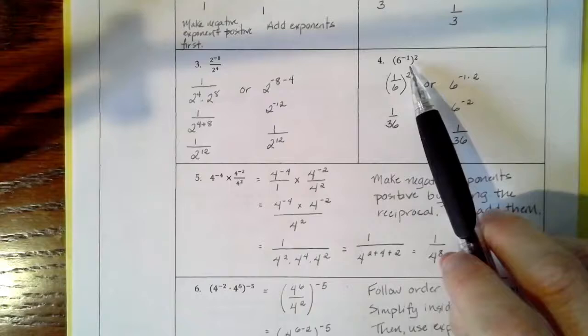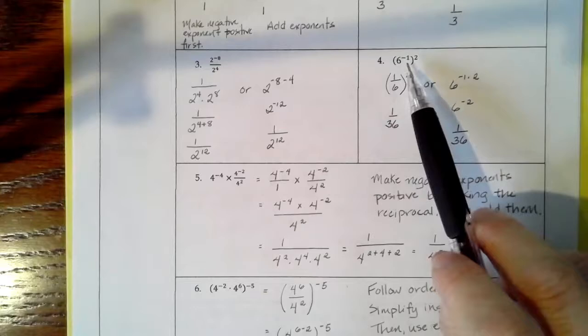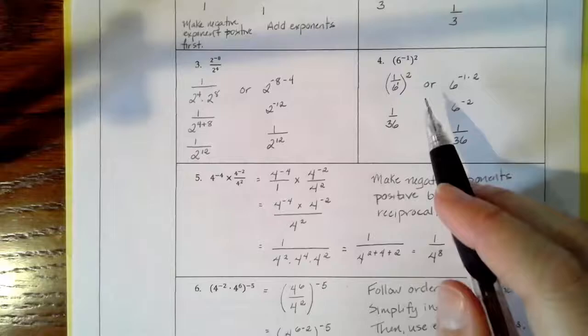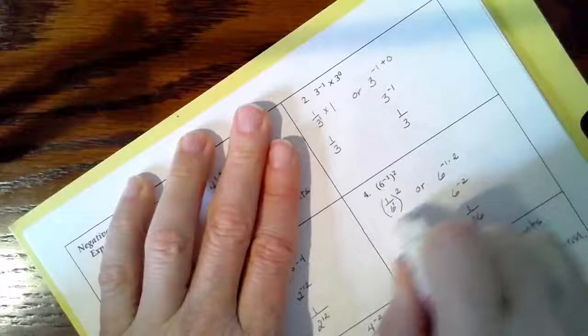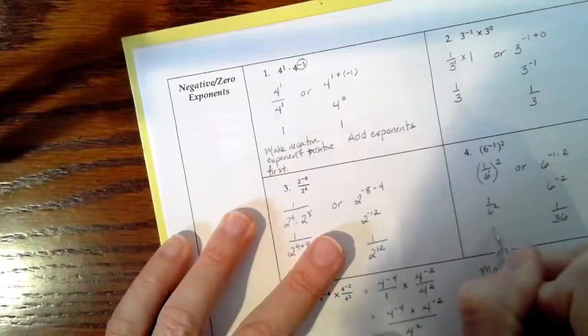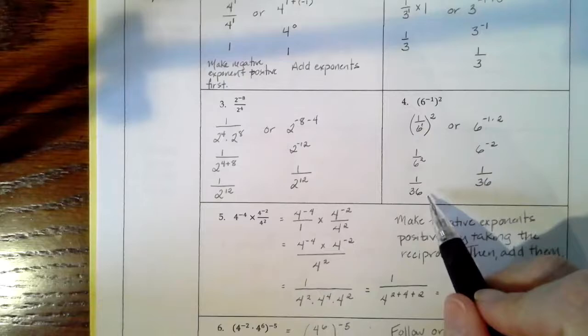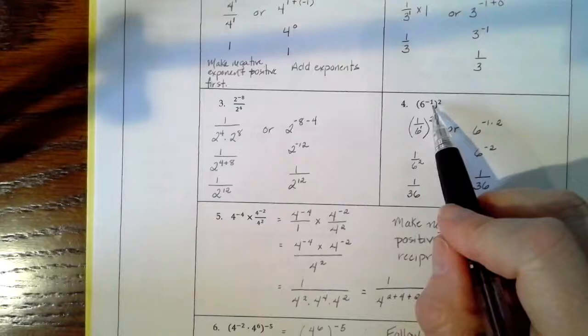Now let's look at number 4. You have 6 to the negative 1 raised to the power of 2. The first thing I would do is make that negative exponent positive. So write it as 1 over 6 to the power of 1. Then it becomes 1 over 6 squared, and finally 1 over 36.